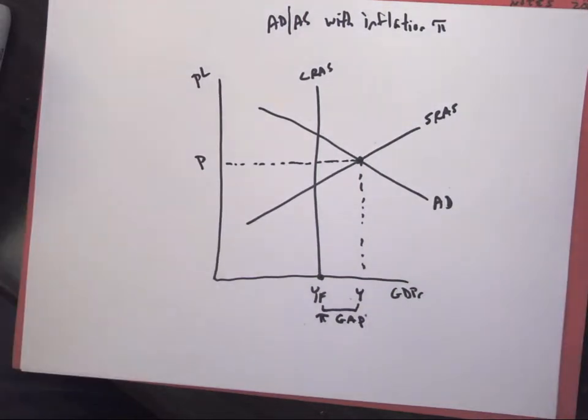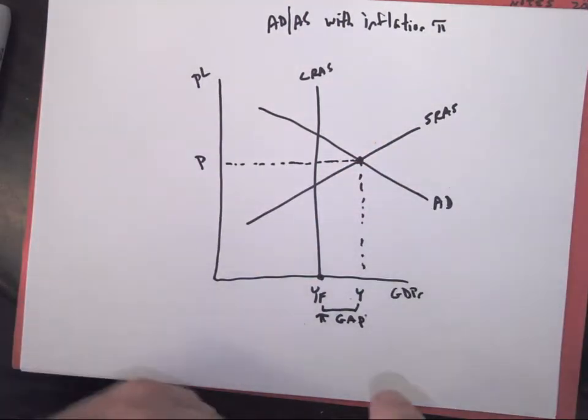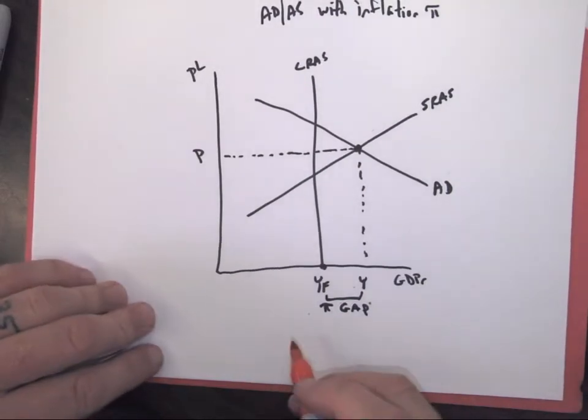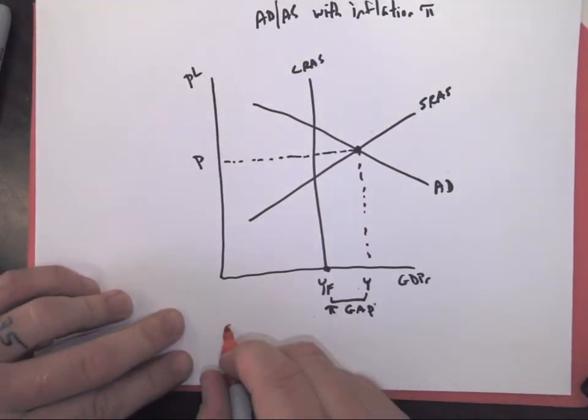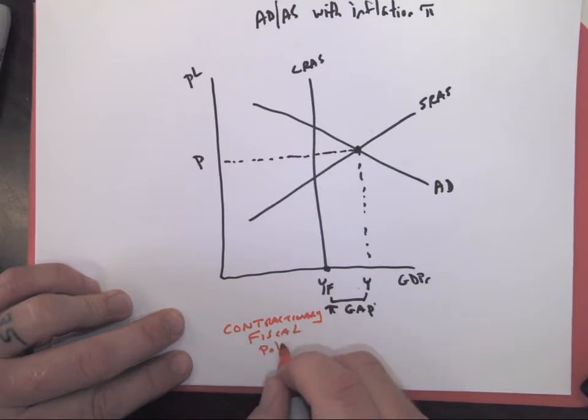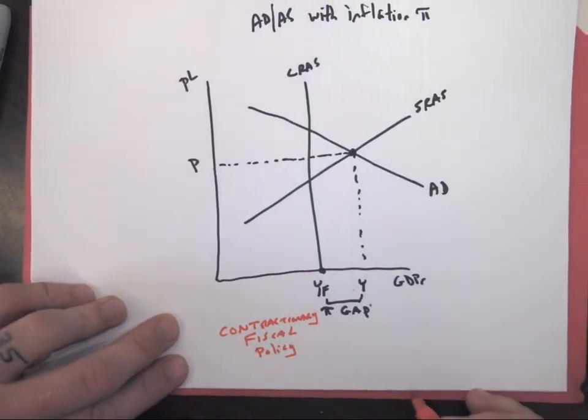If something like this happens and it's not going to fix itself, then we need to enact some kind of policy. We're going to need a contractionary fiscal policy.